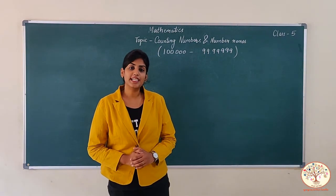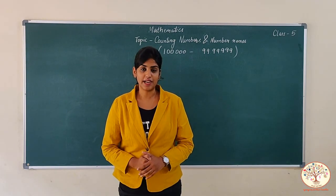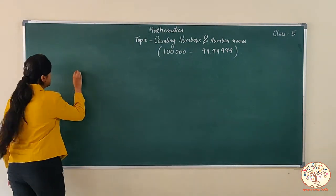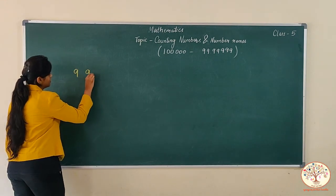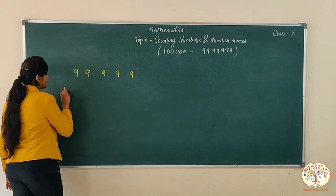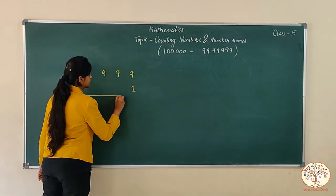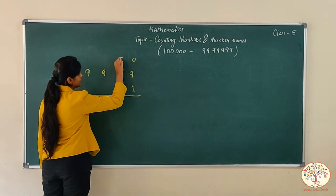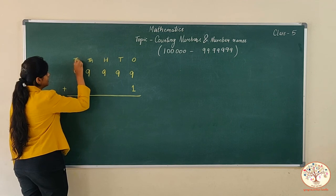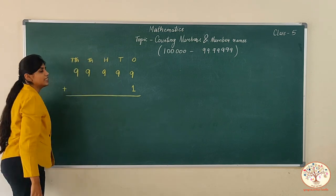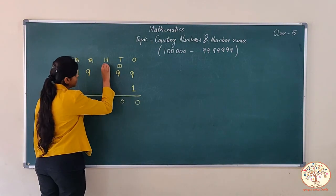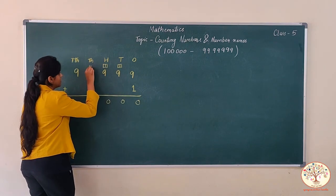You have already studied about five-digit numbers in your previous class, and the largest five-digit number you have known is 99,999. So now let's add one and make it a six-digit number. The place values are ones, tens, hundreds, thousands, and ten thousands. Nine plus one makes ten — carry one.